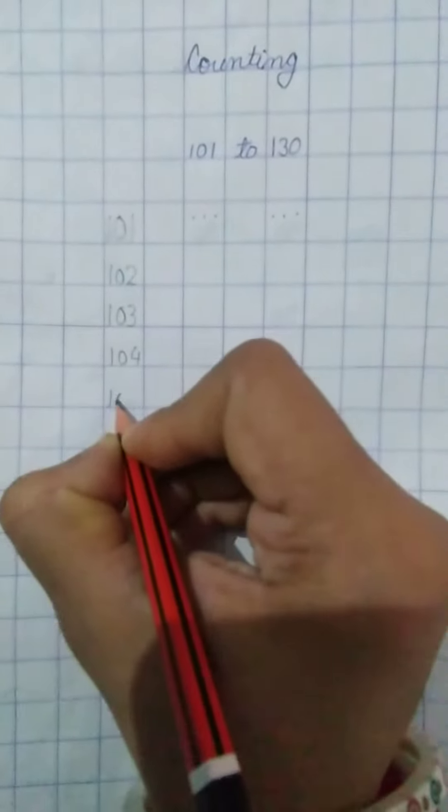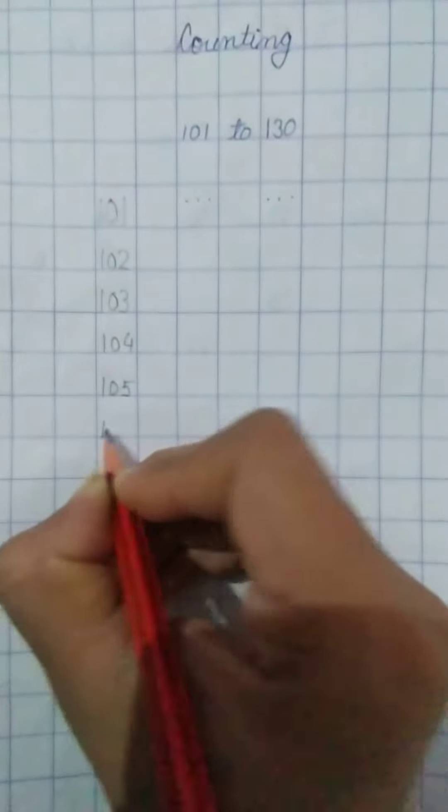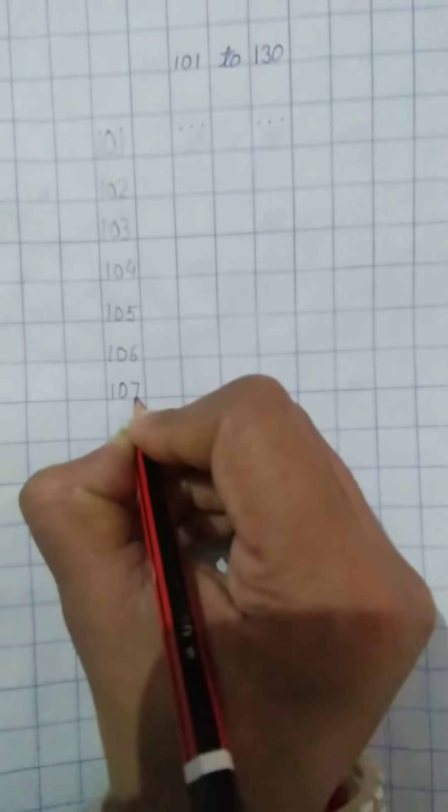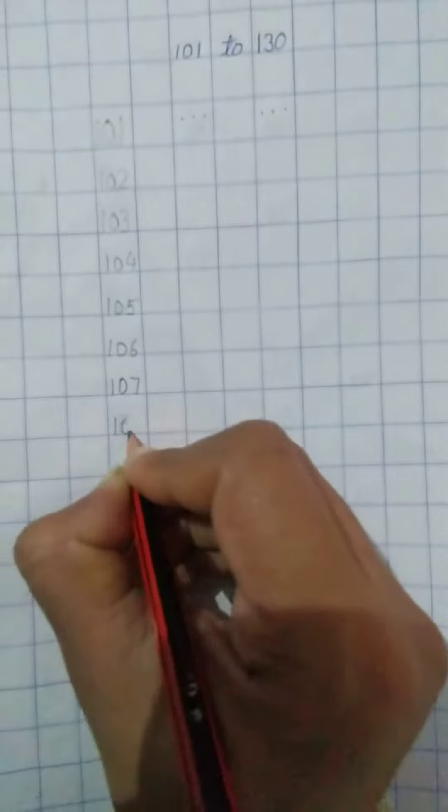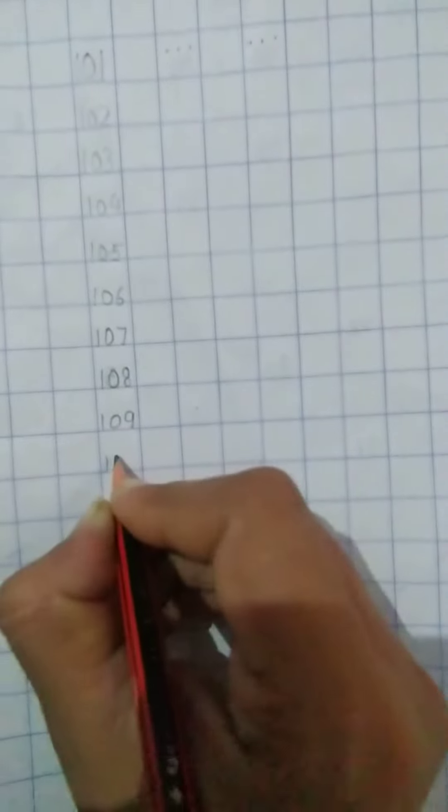Next, 105, 106, next veta 107, 108, 109, 110.